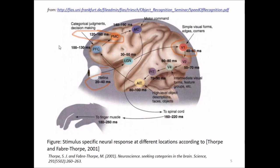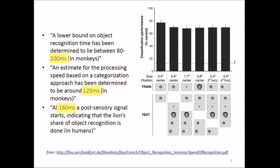Approximately this much time is taken to make decisions and categorical judgments. The lower bound on object recognition time has been determined to lie between 80 to 100 milliseconds in monkeys. The estimation for processing speed based on categorization has been determined to be around 125 milliseconds, and at 160 milliseconds a post-sensory signal starts, indicating that the lion's share of object recognition is done in humans.